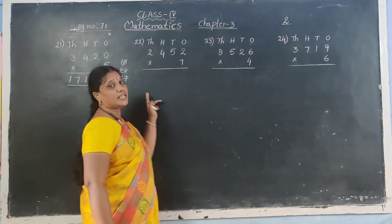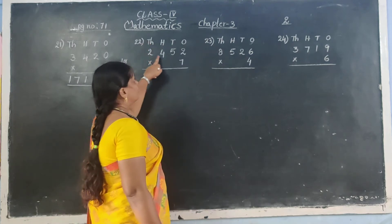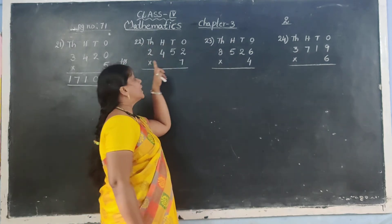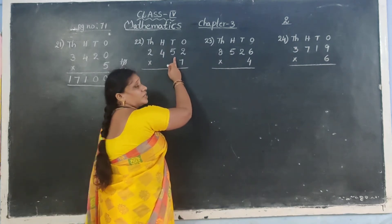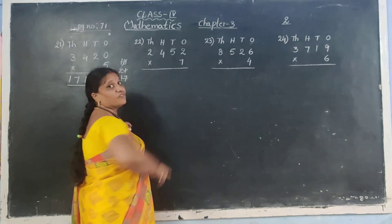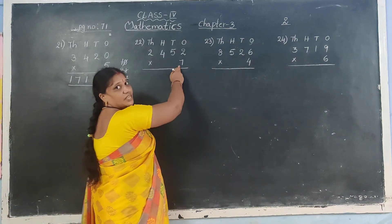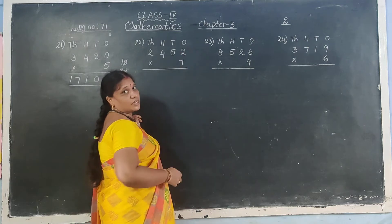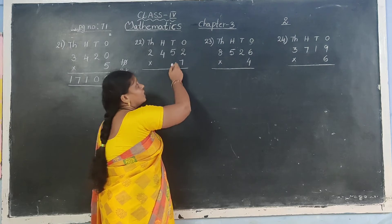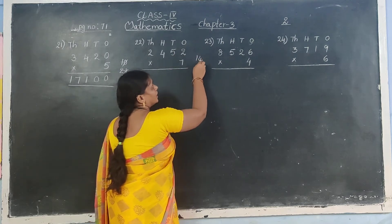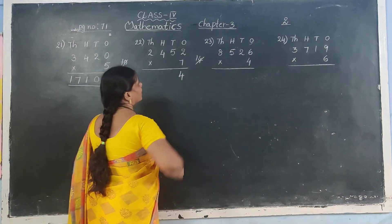Next sum: 22nd sum. 2,452 multiplied by 7. Which table do you need? 7 table. 7 twos are 14. Read up to 2. Write 4 in answer, carry 1.